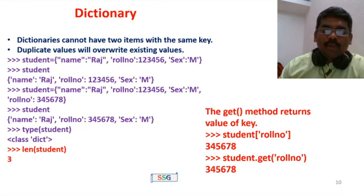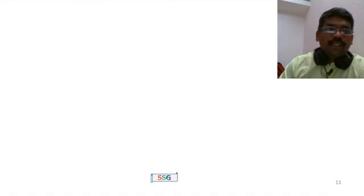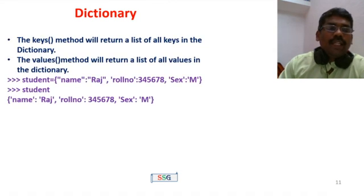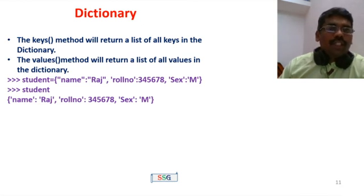You can use the get() method as: student.get('roll number'), or access the key directly. Next are the keys() and values() methods. The keys() method returns a list of all the keys in the dictionary. The values() method returns a list of all values in the dictionary.